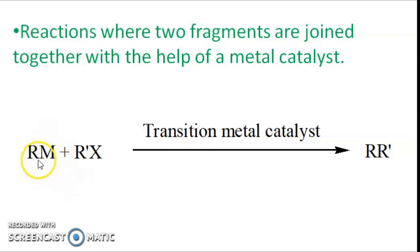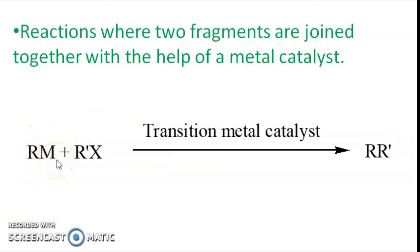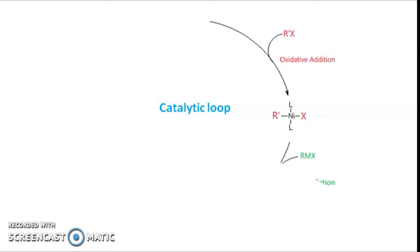The transition metal used in the catalyst is usually palladium or nickel. Now depending upon the metal in the organometallic moiety, we have different coupling reactions: Negishi coupling, Hiyama coupling, Suzuki coupling, Stille coupling, Sonogashira coupling, etc. In Hiyama coupling, the metal part of the organometallic compound is silicon.